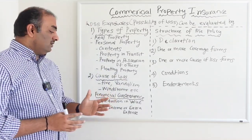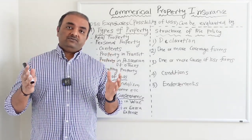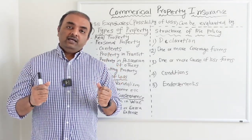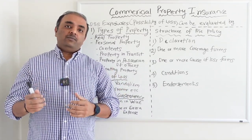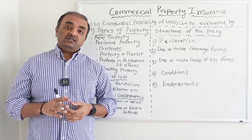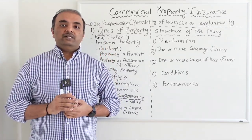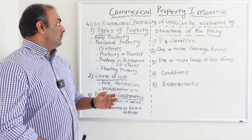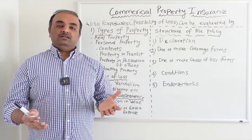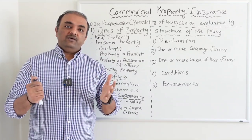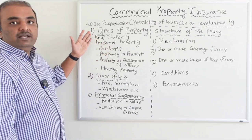The third consideration is financial consequences. Most of us run a business to gain some kind of profit. If a property is damaged and you cannot run your business for a couple of months, there is a financial consequence. We need to take that into account when determining the possibility of loss. So a loss exposure is essentially the possibility of a cause of loss — what are the different possibilities that your business could encounter?